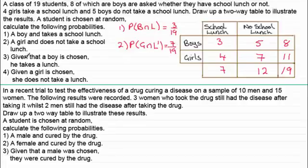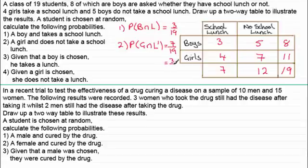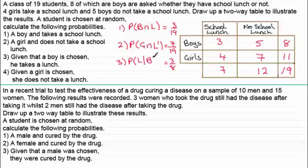Question three varies a little. This time we're given that a boy is chosen, so what's the probability he takes a lunch? Since we know we have eight boys, the probability is three out of eight boys, so the answer is three-eighths. In set notation — you might not have covered this yet — we write this as the probability of L given B, using the 'given' symbol, and that equals three-eighths.